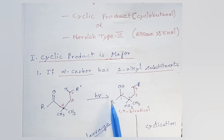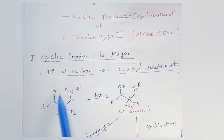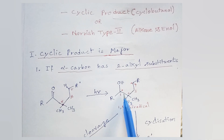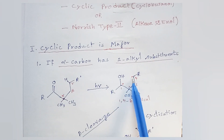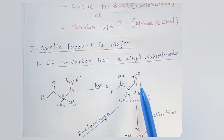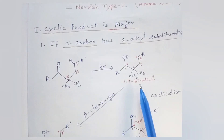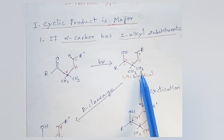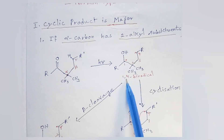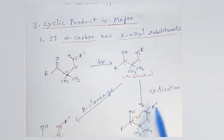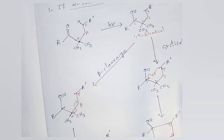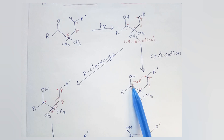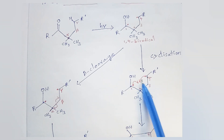Upon irradiation by UV light, the gamma hydrogen is abstracted by the oxygen atom of the carbonyl compound to form a 1,4-biradical. Now, this alpha carbon has two alkyl radicals substituted here, so this 1,4-biradical will undergo cyclization and form a cyclic product. This radical and this radical will join together to form a bond.